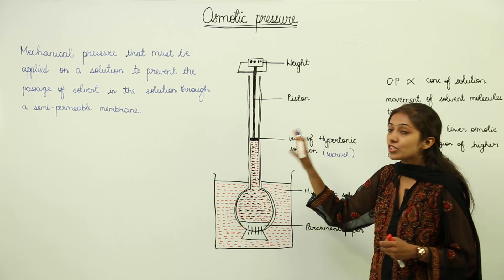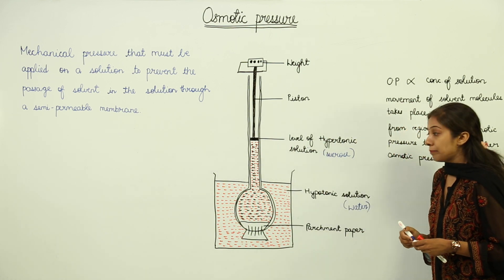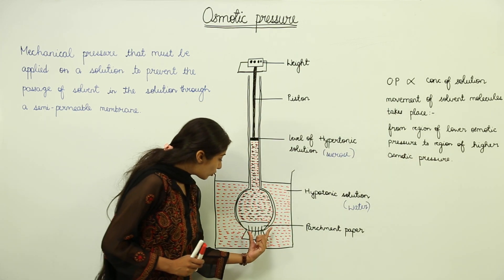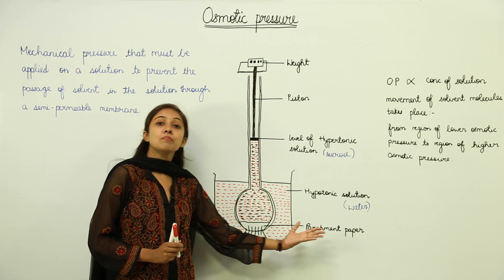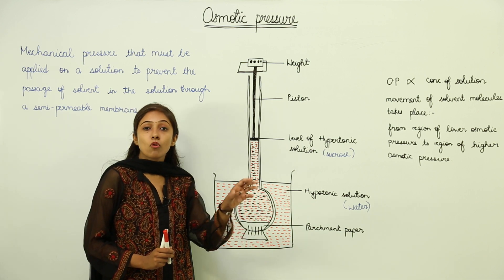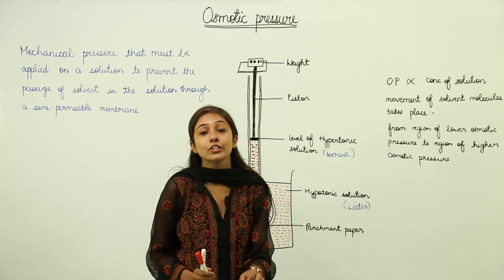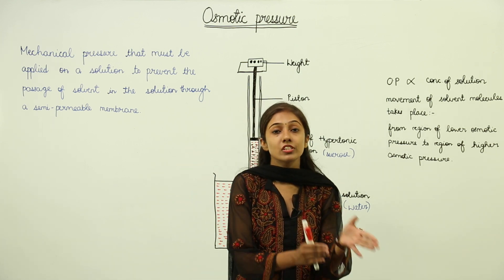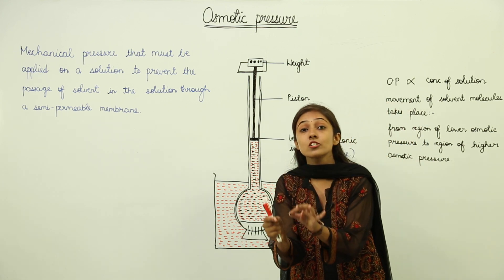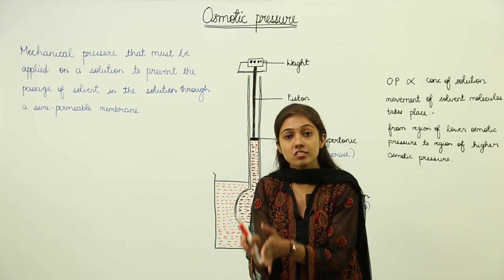Now, we have inserted a piston which is going to move upward and downward. What is going to happen? After some time, because we have put this parchment paper which is acting as a semi-permeable membrane, osmosis is going to take place. You already know what is osmosis — it is the movement of water molecules from the region of their high concentration to the region of their lower concentration, means from a dilute solution to a concentrated solution.